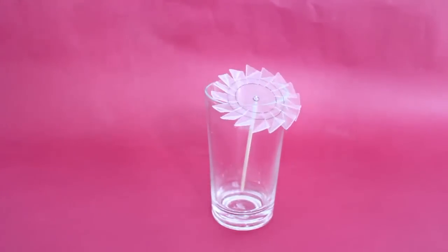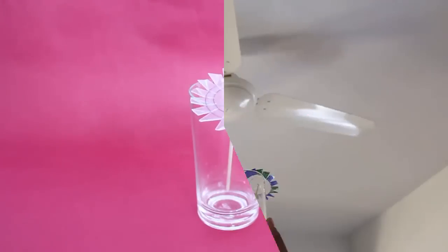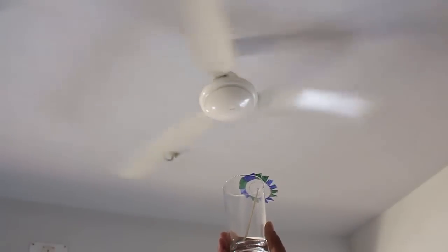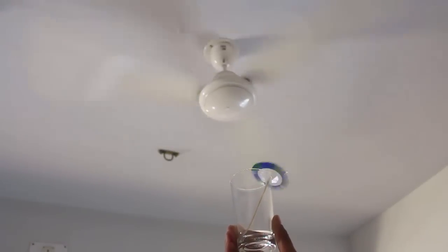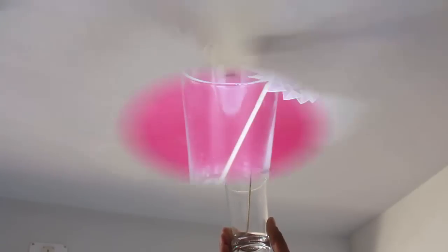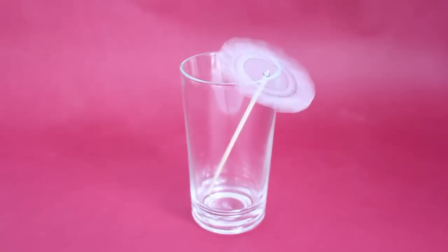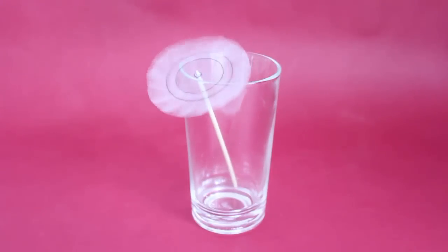The stick end will rest on the base edge of the glass and will be bent. On placing the model under the ceiling fan, the propeller will spin and also go round and round in circles. This is called precession.